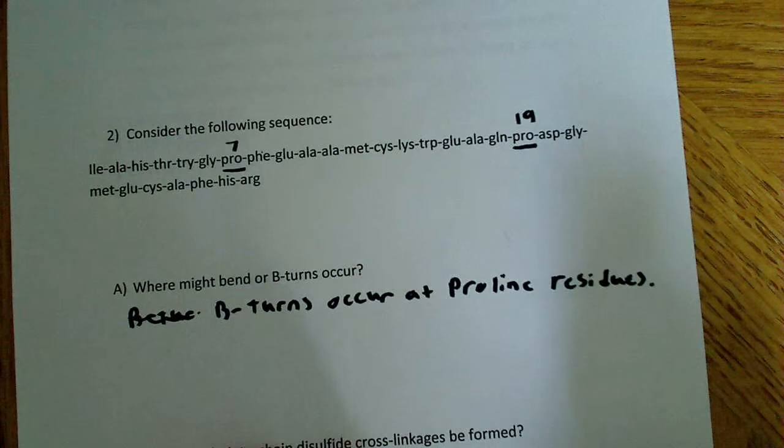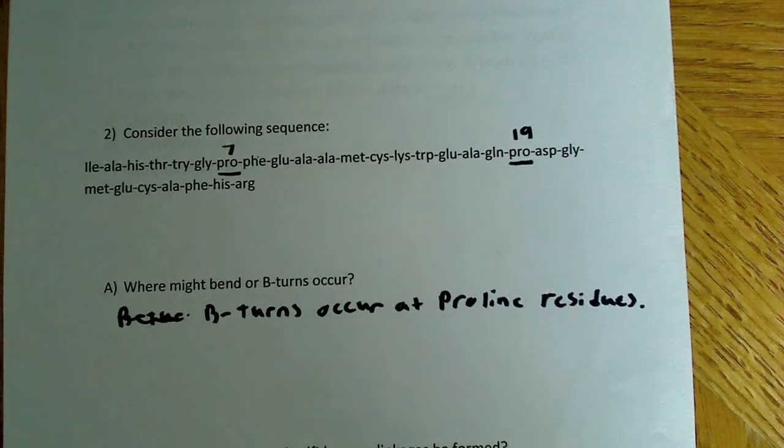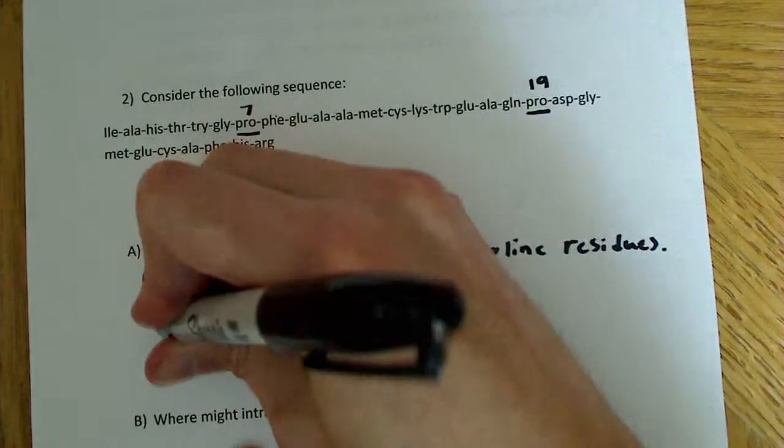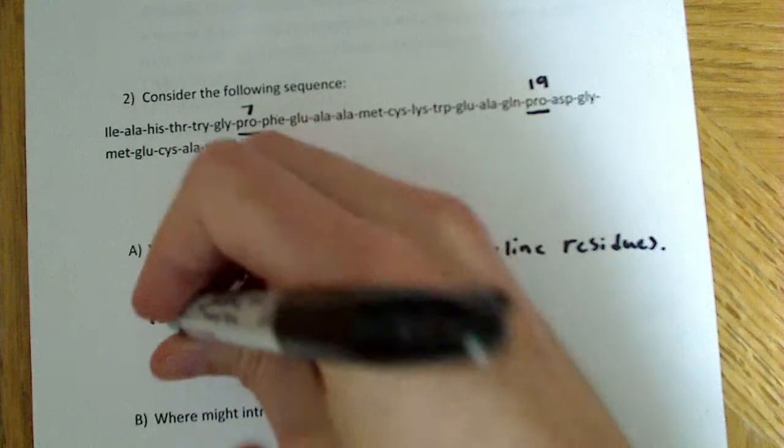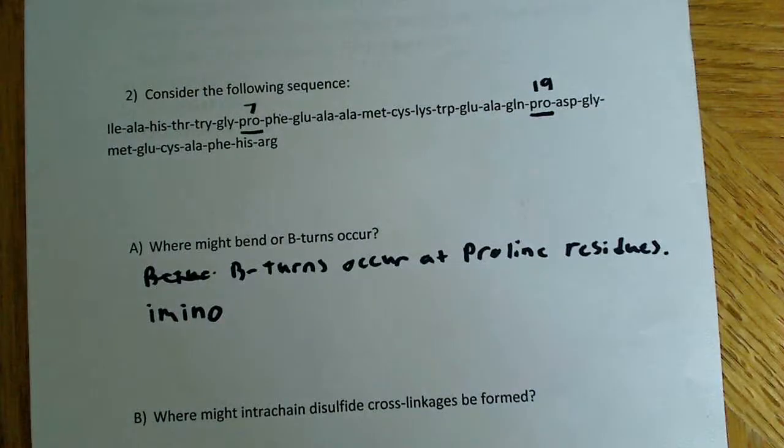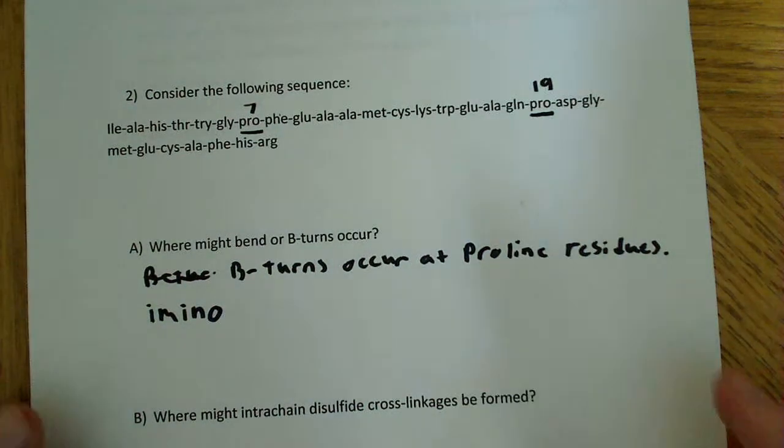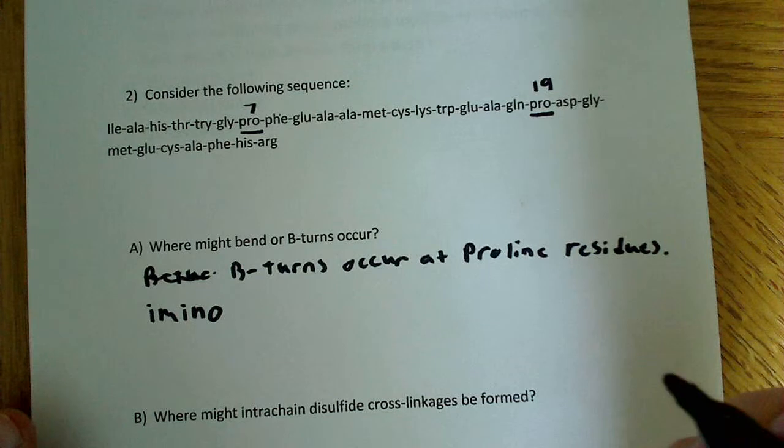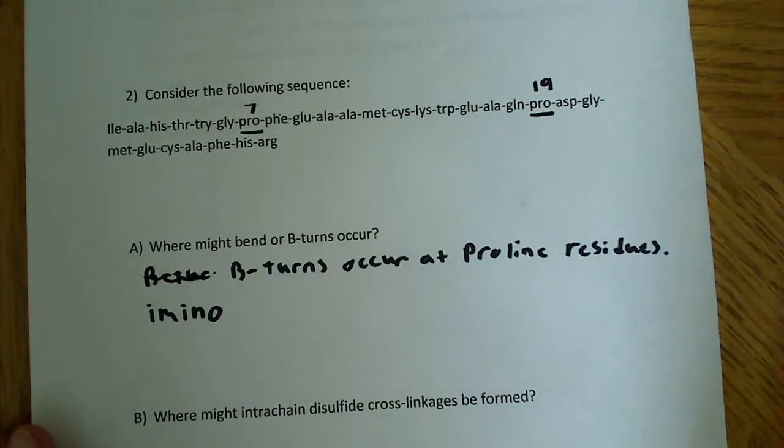Now you might be saying, well, why would we see beta turns there? What's so special about proline? And the key to proline is that the amino group, the imino group, so you might remember this from organic chemistry - the imino group readily assumes the cis configuration, which is good for forming these beta turns. So proline residues are in the cis configuration, which accommodates turns well, and that's why beta turns tend to occur at proline residues.